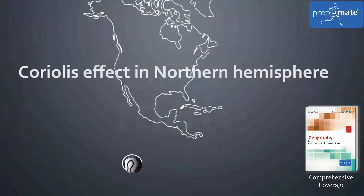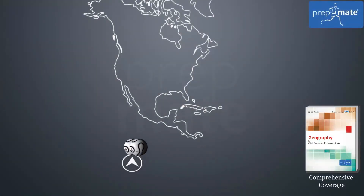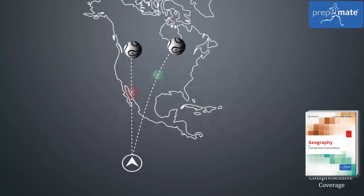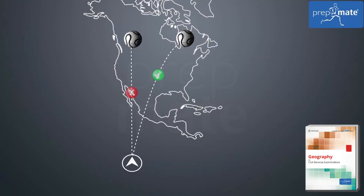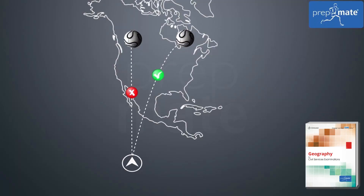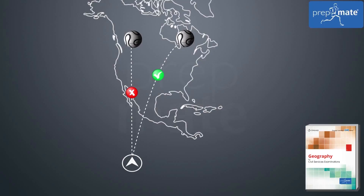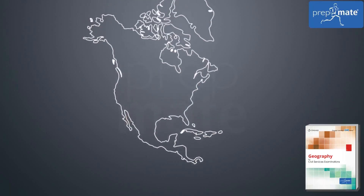Coriolis force in the Northern Hemisphere. Let us pretend you are standing at the equator and you want to throw a ball to your friend in North America. If you throw the ball in a straight line, it will appear to land on the right of your friend, because your friend is rotating along with the Earth at a slower speed. But the ball will maintain its speed of rotation as it shifts from the equator towards your friend. Therefore, the ball will appear to have moved to the right side.